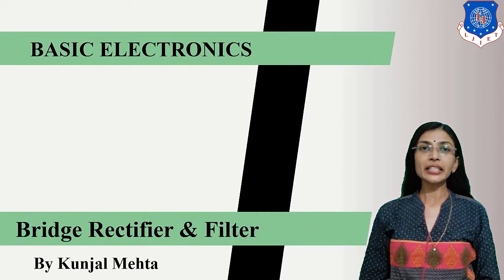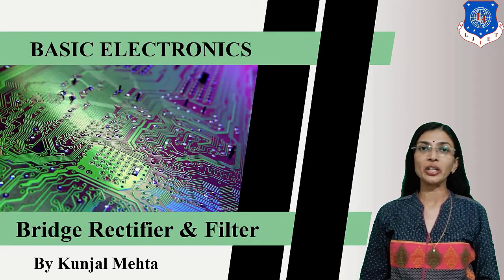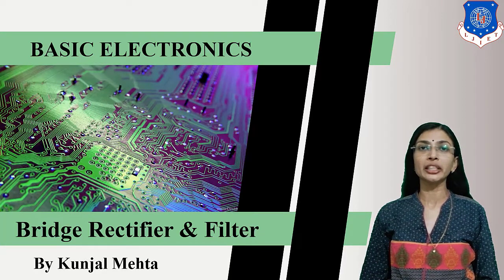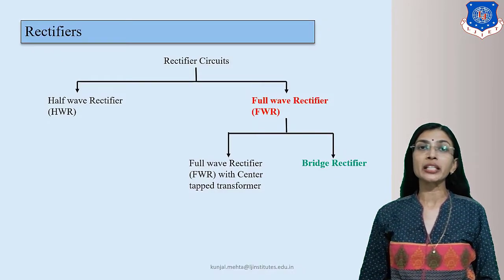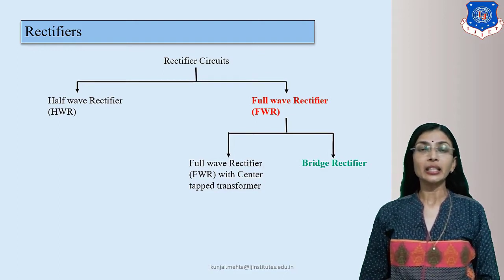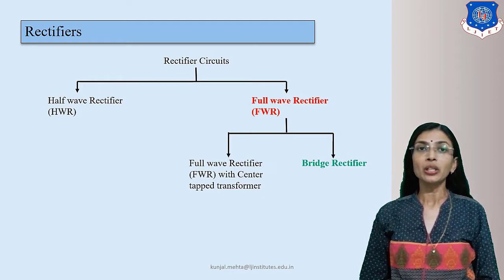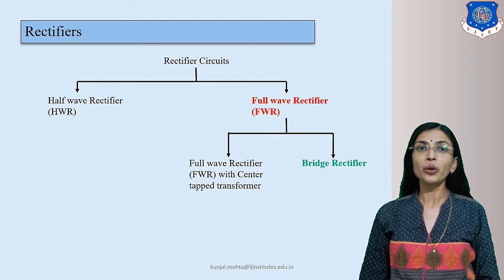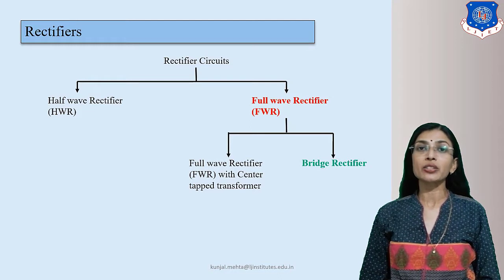Hello everyone, let's continue with the basic electronics video lecture sessions. Today we will study about the bridge rectifier and filter topic of chapter 1. We all know what a rectifier is — the diode circuit which converts AC into pulsating DC. That means the output will not be pure DC; it will have AC component as well as DC component. Let's start with the rectifier circuit types.